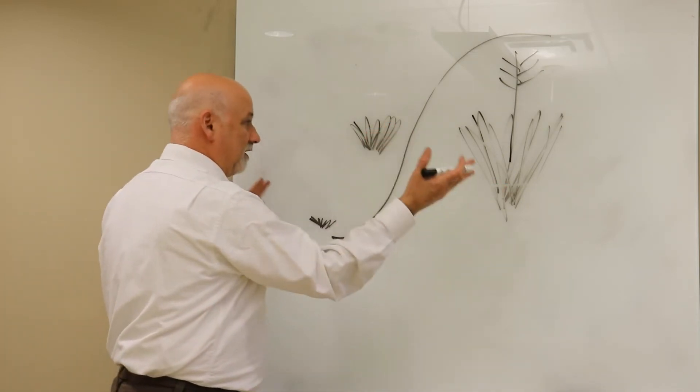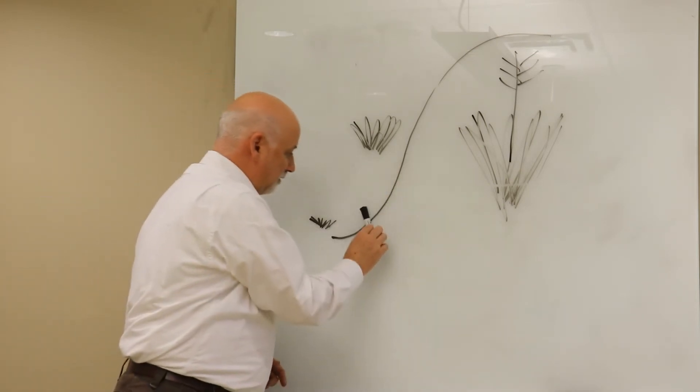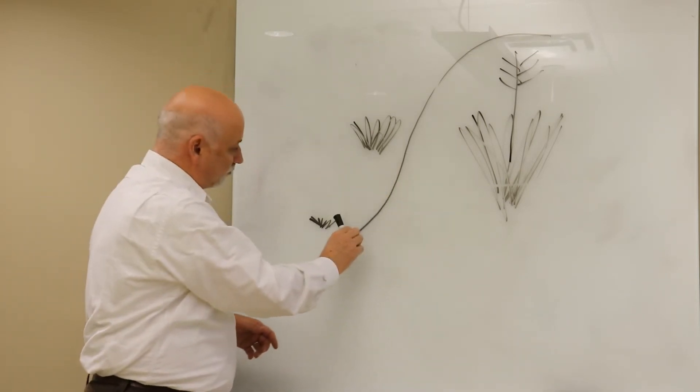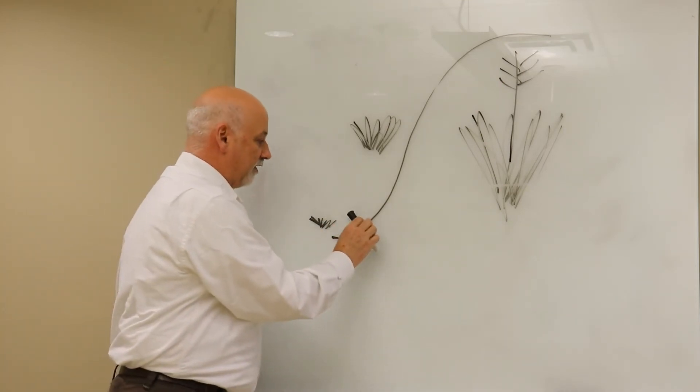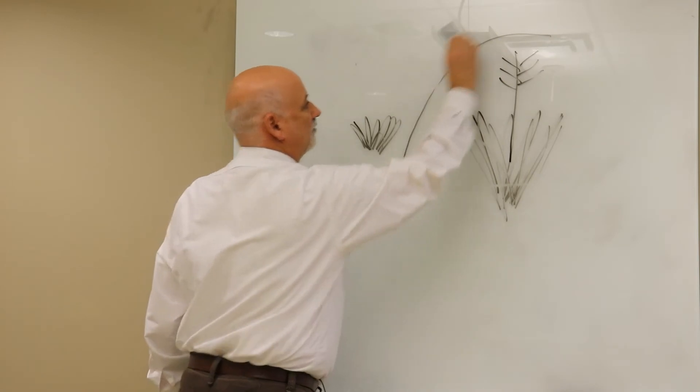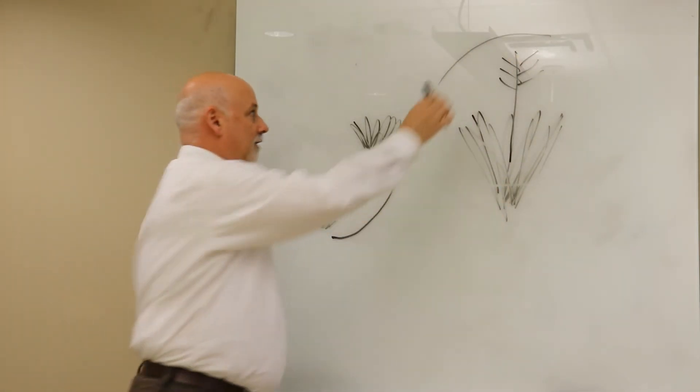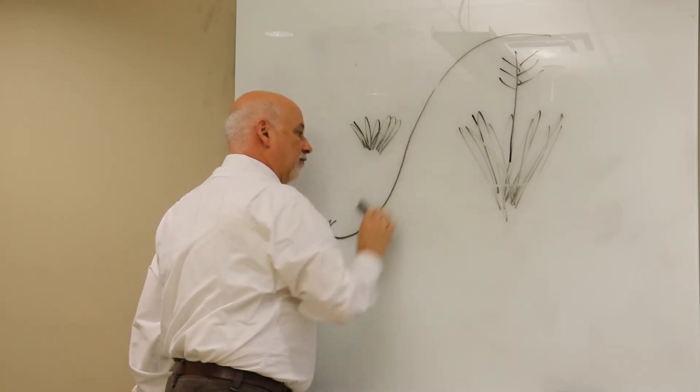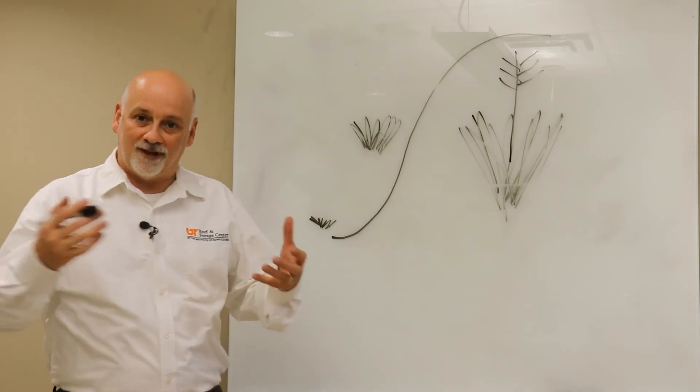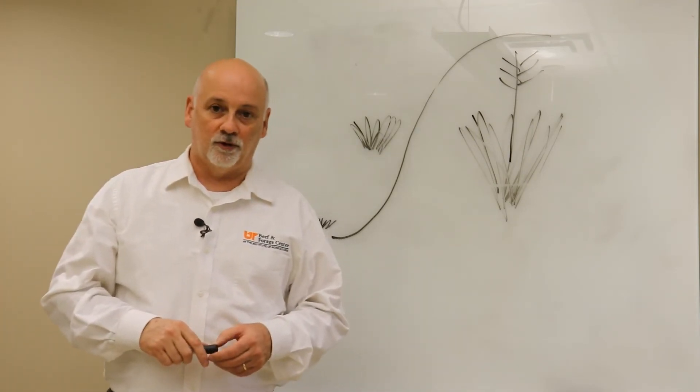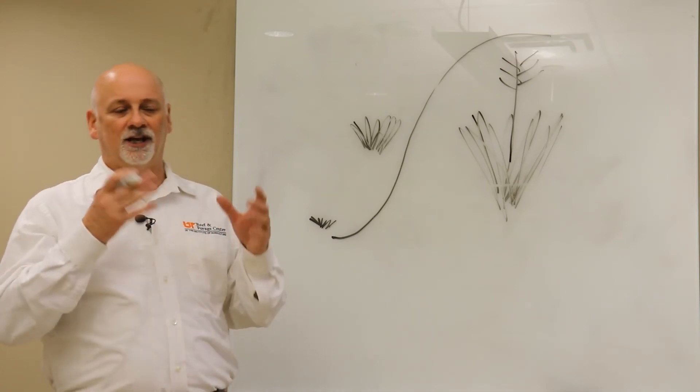This is simply the context for trying to rotationally graze something. You graze your plants down, but before you graze them too hard you get the animals off into a new paddock or a new field. Let the plants regrow. Before they spend too much time over on this side, you put animals back on, graze it back down, and you just move back and forth within this active growing phase. That's what you're trying to do with rotational grazing.